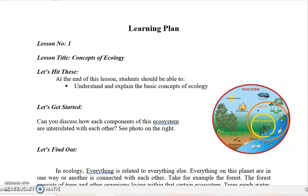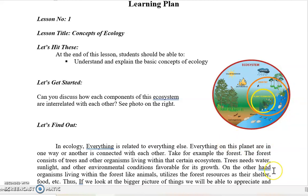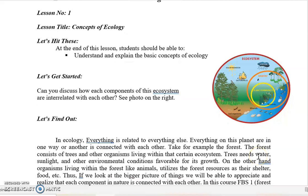Lesson 1: our lesson title is Concepts of Ecology. At the end of this lesson, students should be able to understand and explain the basic concepts of ecology. If you look at the right side of the screen, you can see the ecosystem. Remember, in the ecosystem or in nature, everything is related to everything else — everything on this planet is in one way or another connected with each other. Take for example the forest: even if you study forestry, we should not think only about trees. We should think that everything is connected with everything else.